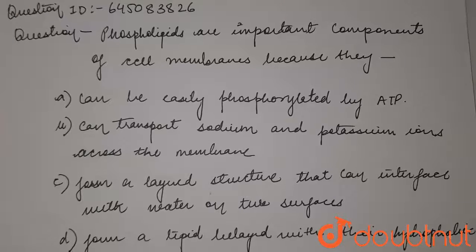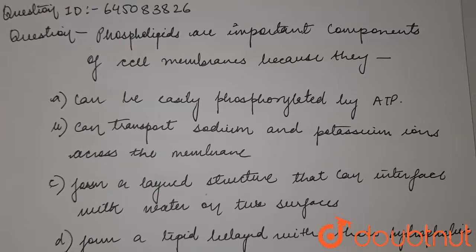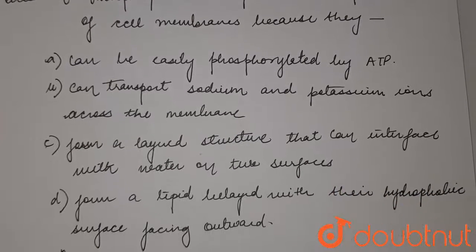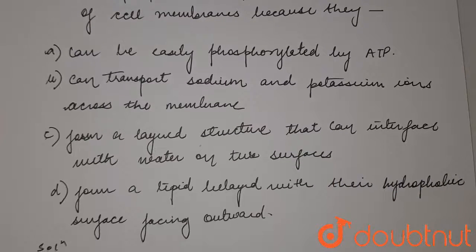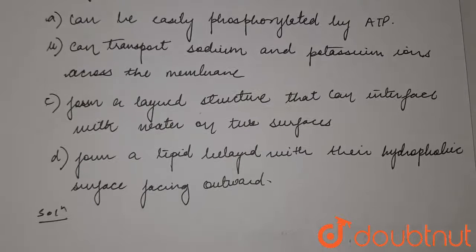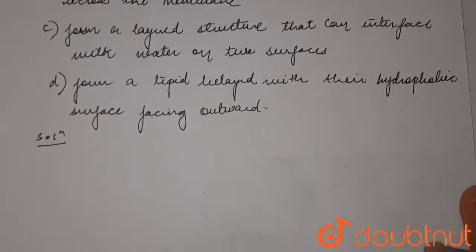So students, we have a question. Phospholipids are important components of cell membranes because they: A. can be easily phosphorylated by ATP; B. can transfer sodium and potassium ions across the membrane; C. form a layer structure that can interfere with water on these two surfaces; and D. form a lipid layer with the hydrophobic surface facing outwards.